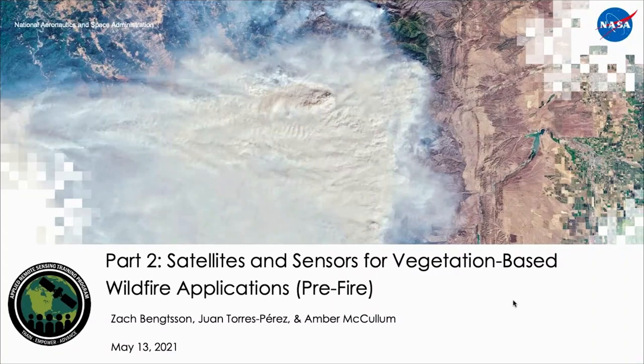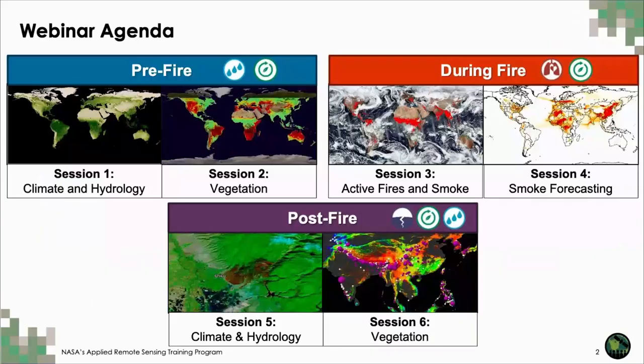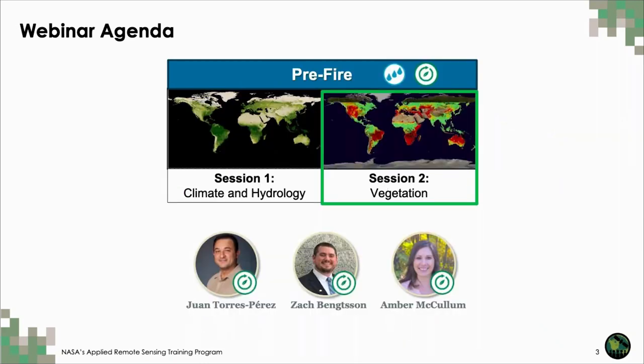Hi everyone, and thank you for joining us today for part two of our series on satellite observations and tools for fire risk detection and analysis. Today, we'll be discussing satellites and sensors and some associated products for vegetation-based fire applications. Here's a quick breakdown of how the full fire series is organized. The topics of fire touch on various earth systems at pre-, during, and post-fire stages of the fire cycle, but today we're going to be really focusing on the pre-fire stage for part two, and more particularly, vegetation. My name is Zach Bankson, and I'm joined by my colleagues Juan Torres-Brez and Amber McCullum for this training.